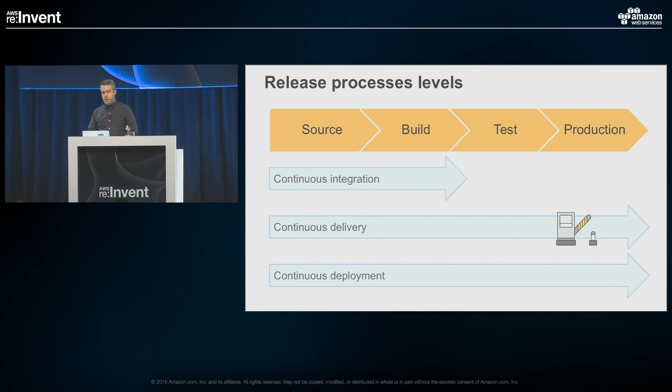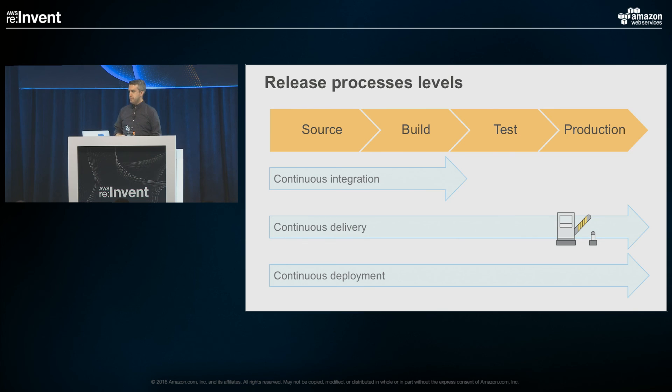Continuous Deployment is the goal many people want to reach — the idea that you have the entire process automated, from check-in all the way out to consumption by your customers. So we have four phases and three different process levels for how we deliver software. I just wanted to set that base point.